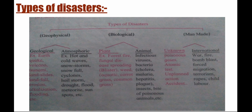In the textbook, they have given types of disasters. Usually we know there are only two types: natural disasters and man-made disasters. But these are further divided — first is geophysical disasters, second is biological disasters, and third is man-made disasters.